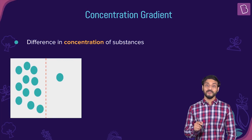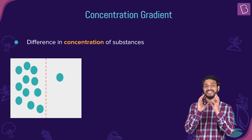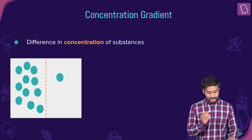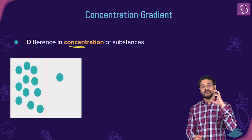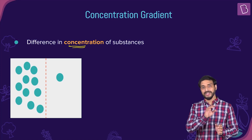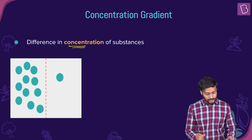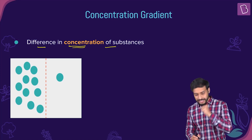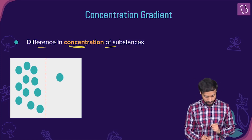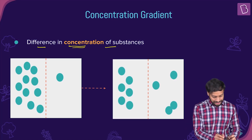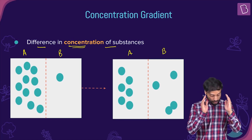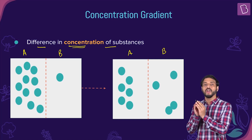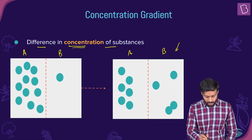Molecules also prefer to move from a place where it's very crowded to a place which is less crowded. This is related to the term concentration — molecules try to move from a place where there's a higher concentration to a place where there's lower concentration. This difference in concentration is called the concentration gradient. Molecules move from high concentration to lower concentration.